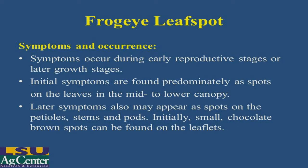As far as the frogeye leaf spot symptoms and occurrence, we find that symptoms occur during the early reproductive stages or even a little later. The initial symptoms are found predominantly as spots on the leaves in the mid and lower canopy, where we are maintaining high moisture levels and high humidity, and that allows for development of the disease to occur.